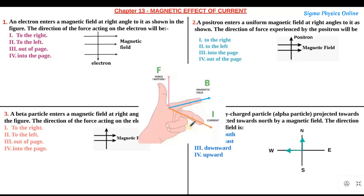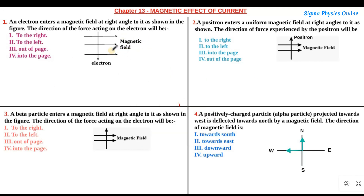With this knowledge let us solve all four questions. In this question we have been given a magnetic field going from left to right. An electron is coming in the downward direction. We know an electron is a charged particle and it carries a negative charge. So a negatively charged particle is coming downwards. The electron is moving downwards and the magnetic field is moving to the right, so they are mutually perpendicular to each other.